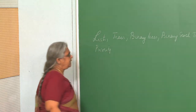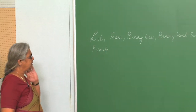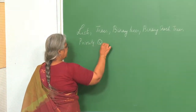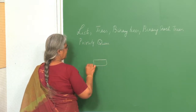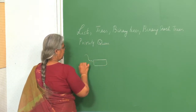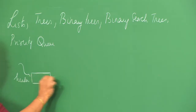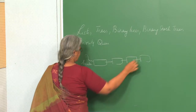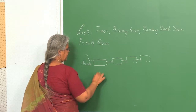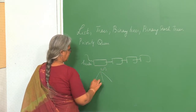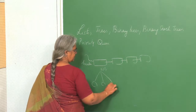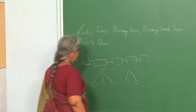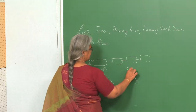Now if you look at all these data structures — whether it's a list, a tree, binary tree, binary search tree, or a priority queue — we always had some kind of a node which had higher priority. There was a header node in the case of lists, which pointed to other nodes. For a tree, we said there is a root and then there are children. Similarly, for a binary tree, we had a left child and right child, and a node designated as the root.